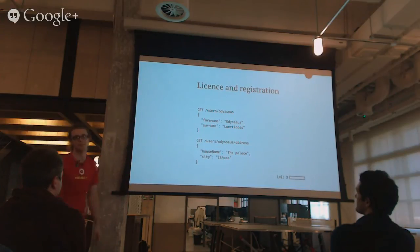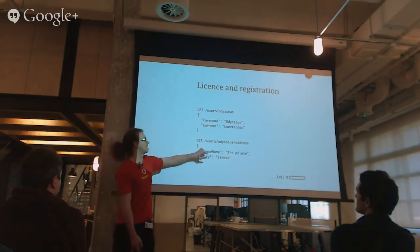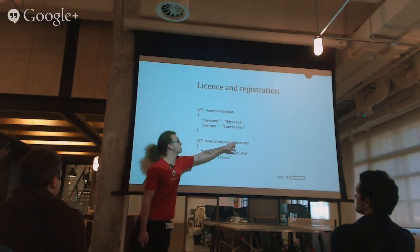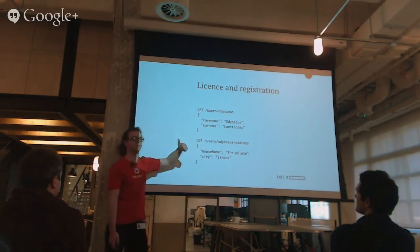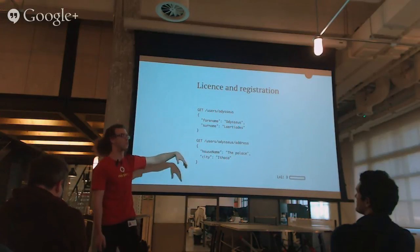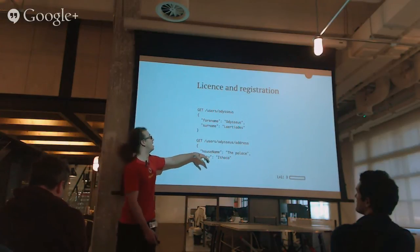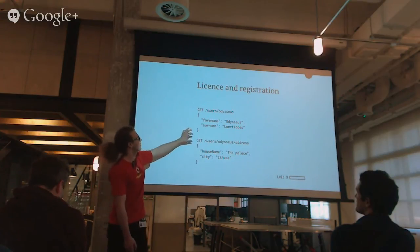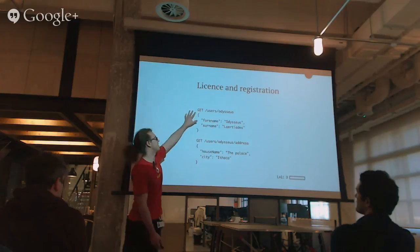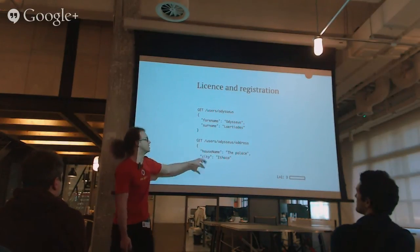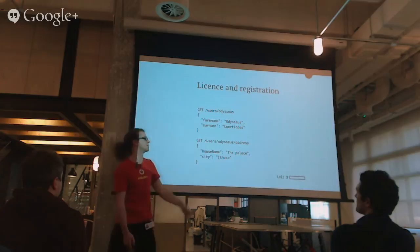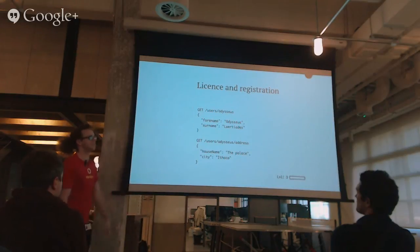I'd say it's about a level three API. It separates the address and user resources — so that's level two. There's no XML in sight, so it's definitely not level one. And we've got the verbs — they're both GETs here, it's not very interesting, but we've got verbs in use. The GET corresponds to a read — it's saying 'get me that address.' So that's a decent API.